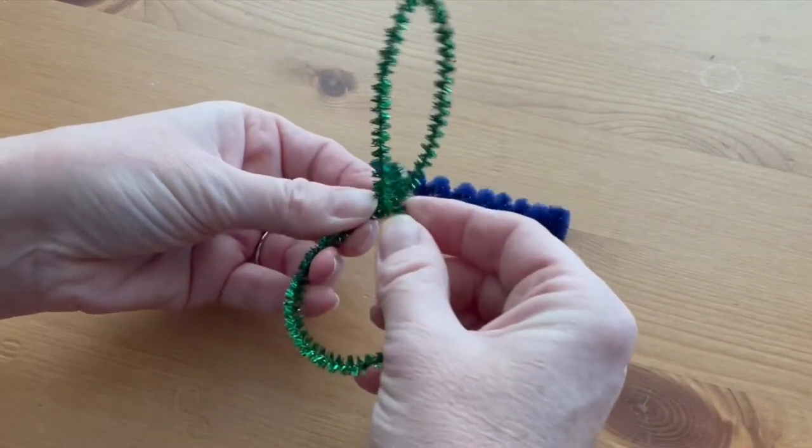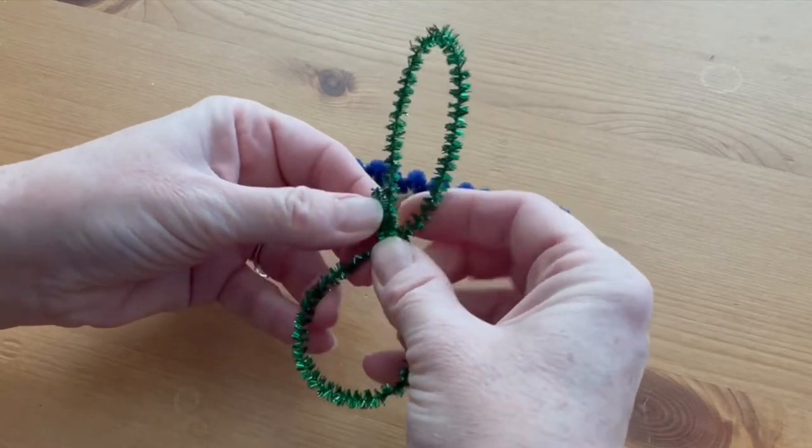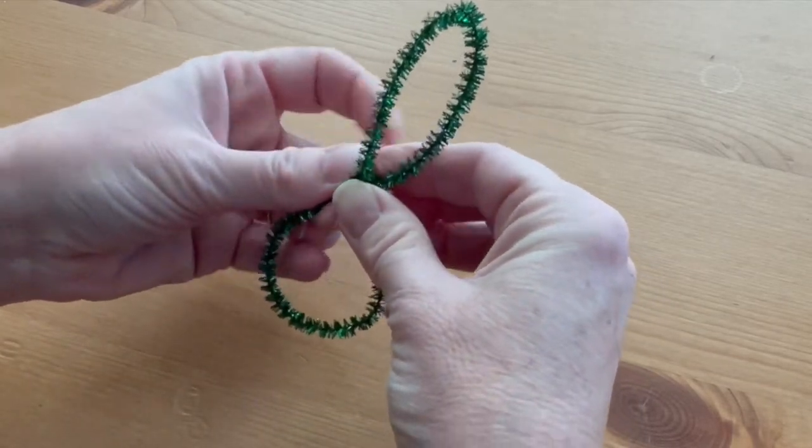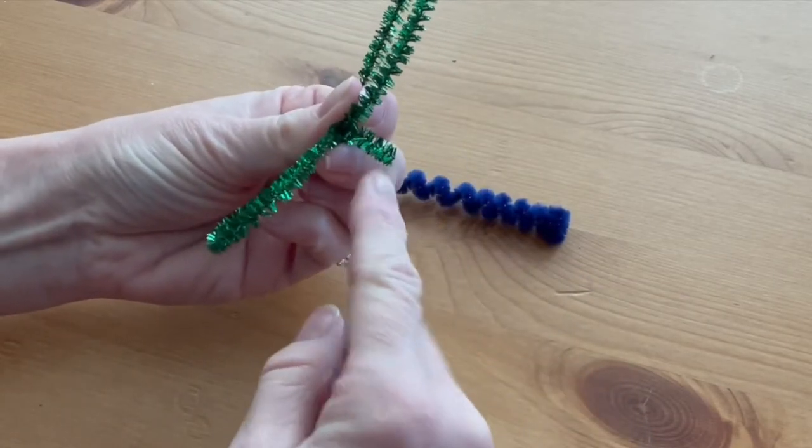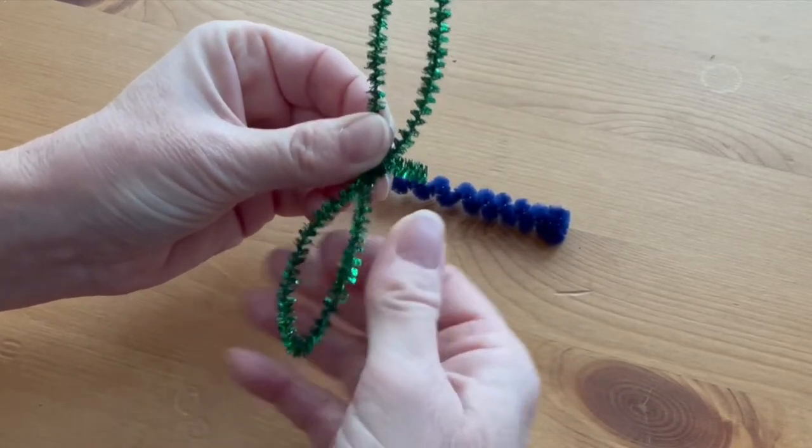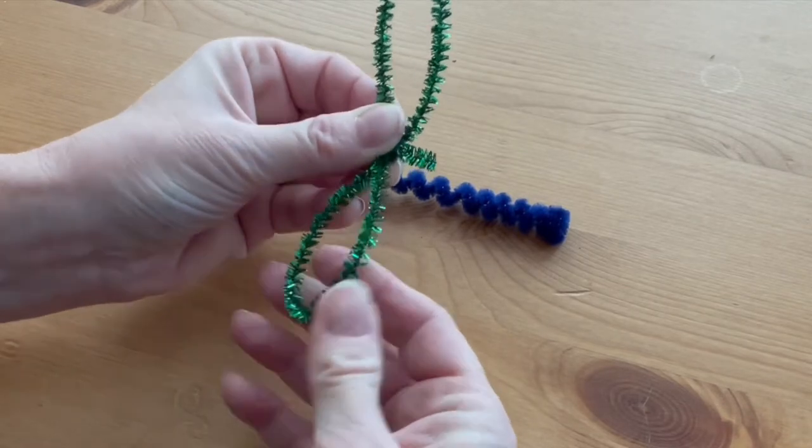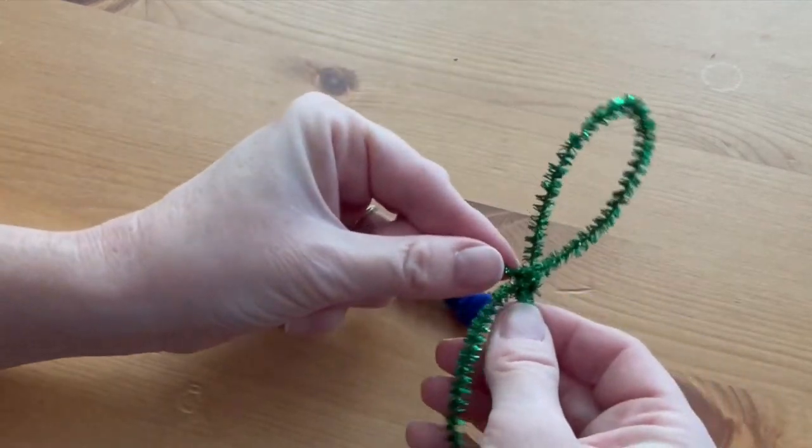But you're going to leave a little tail on the end of the wing, so leave that—that's how we're going to attach it to the body. Shape the wing just like you did the other one.